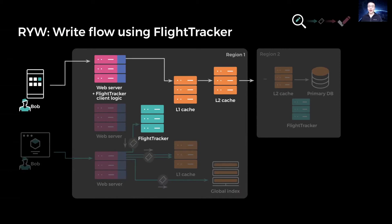On the write path, after a web request performs a write, the datastore returns its metadata in a ticket, which our client library then forwards to FlightTracker before acknowledging the write succeeded to the application. Both the read and write flows are done automatically by the client library, hidden from the applications.